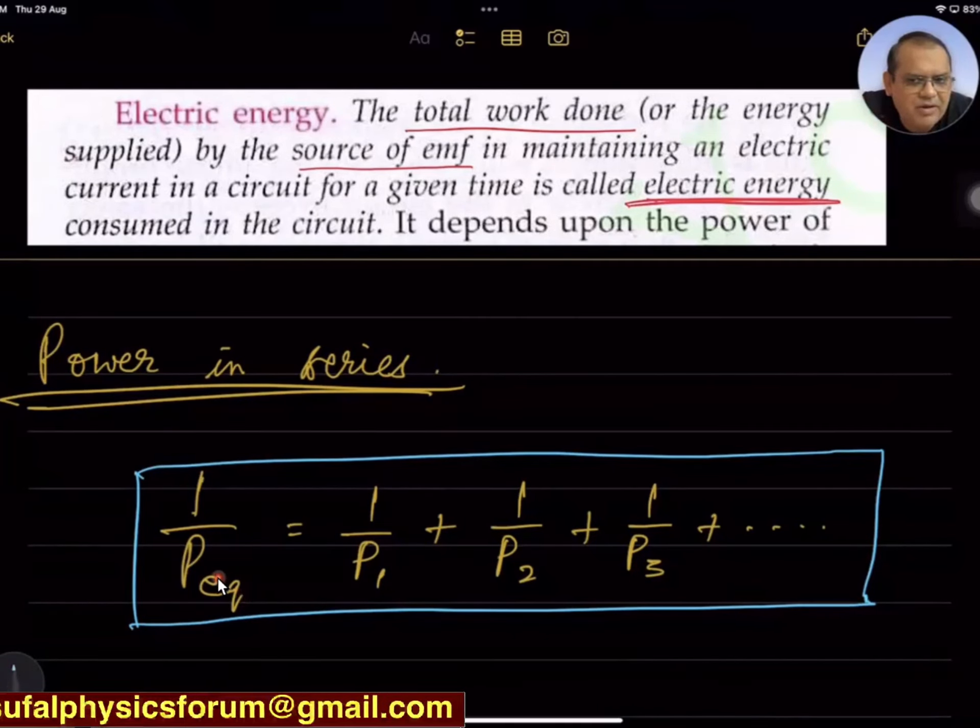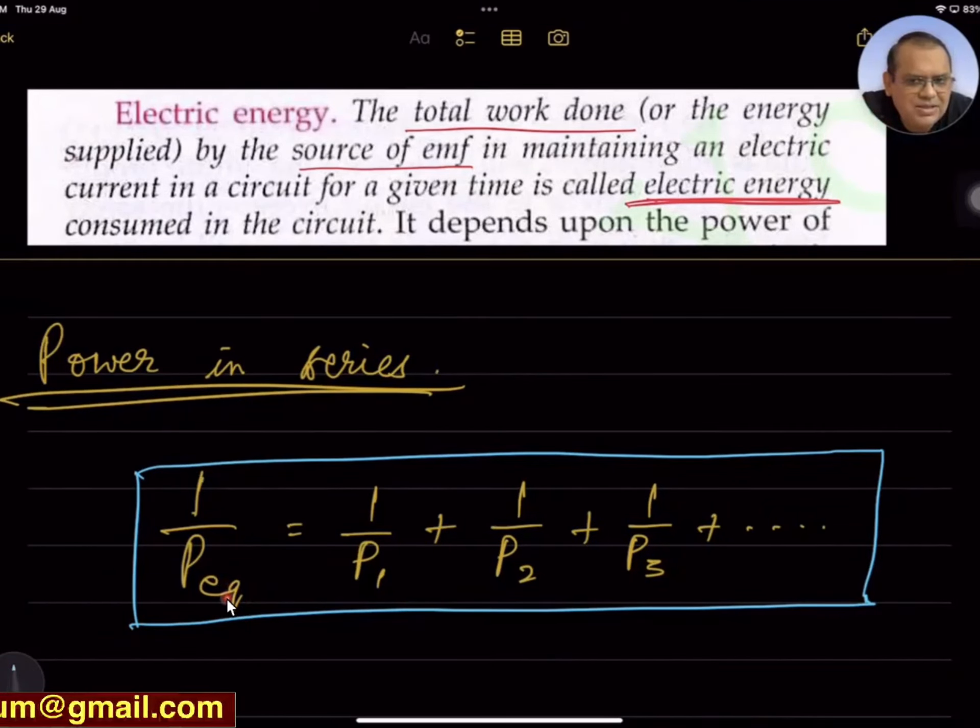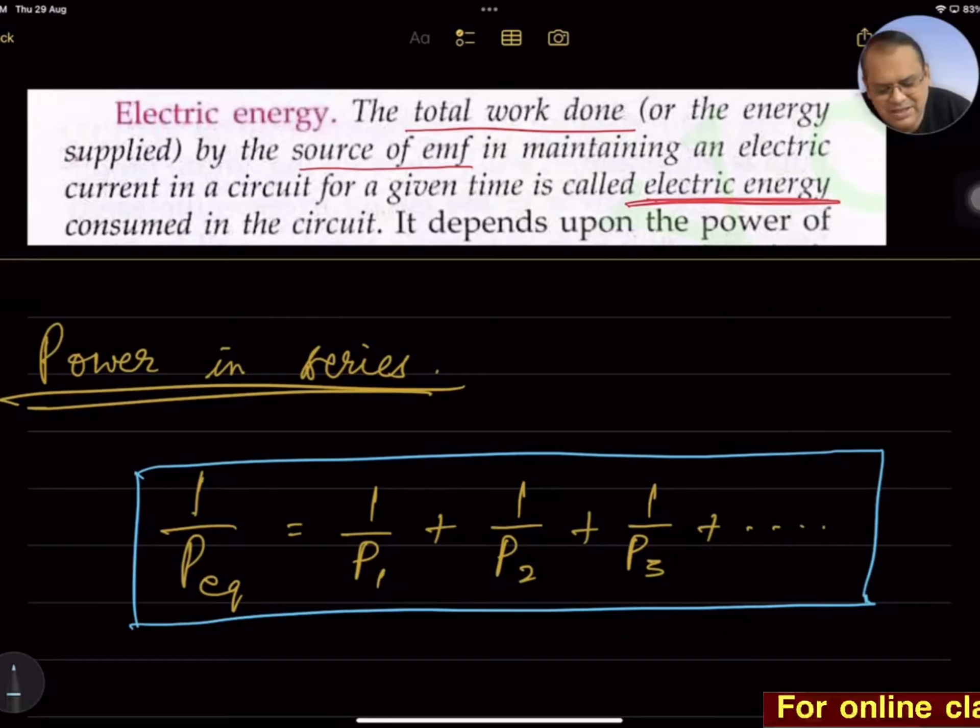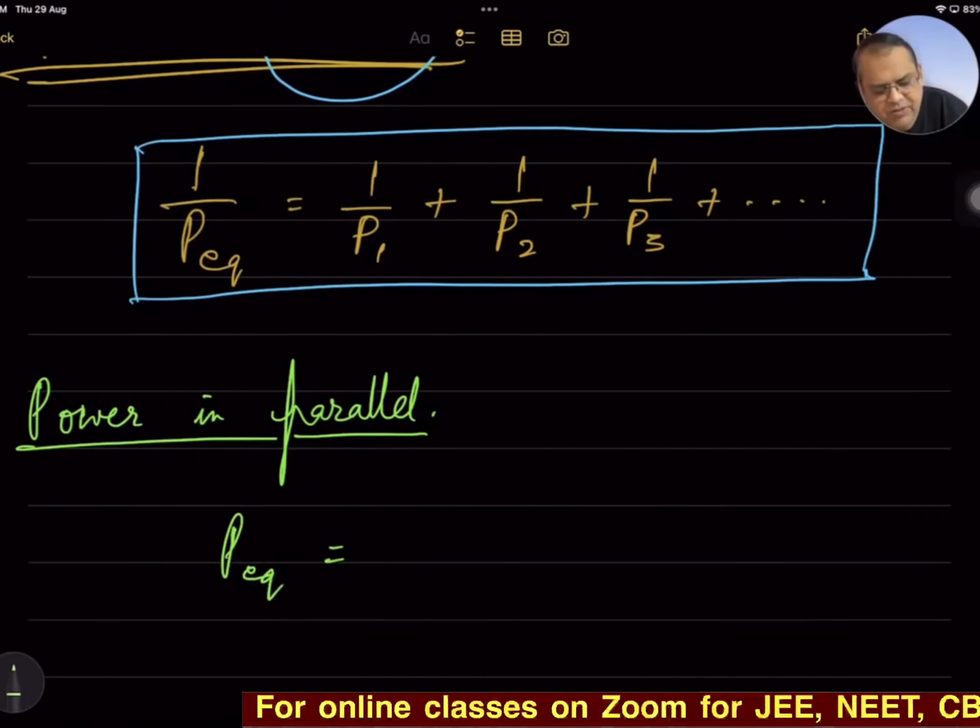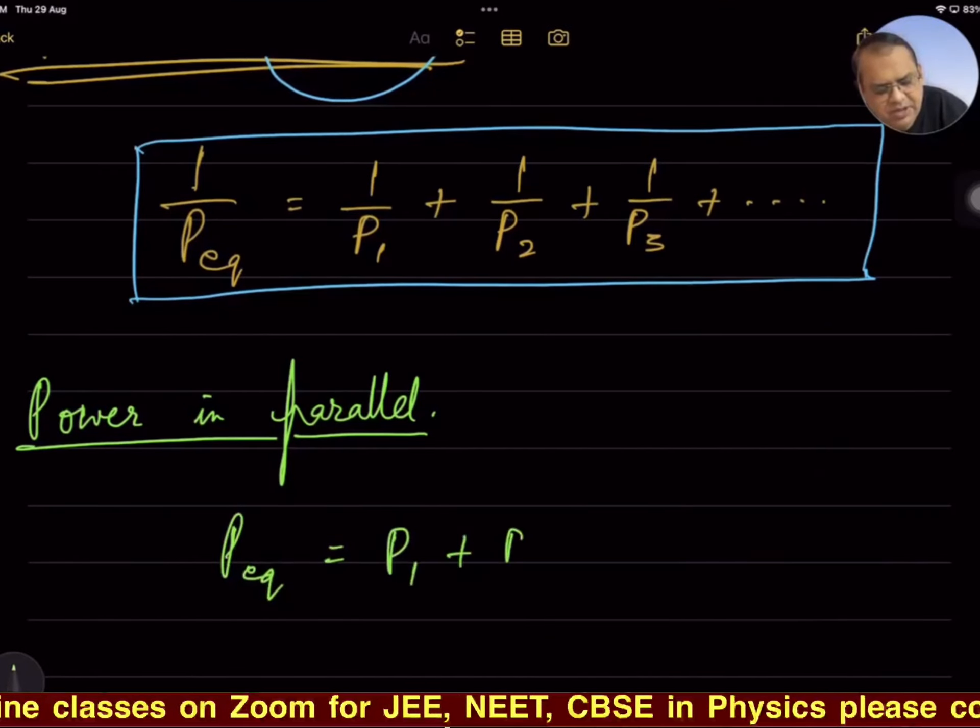For power in parallel, P_equivalent = P₁ + P₂ + P₃ and so on. P₁, P₂, P₃ are individual power consumption such that they are connected in parallel to the source of EMF.